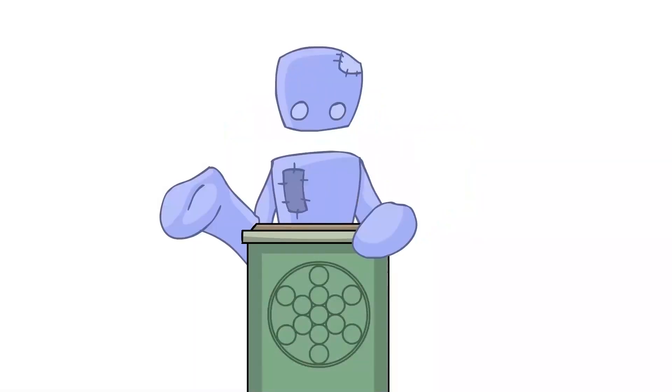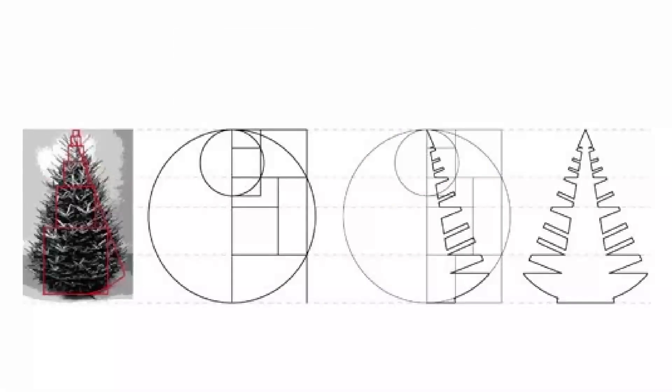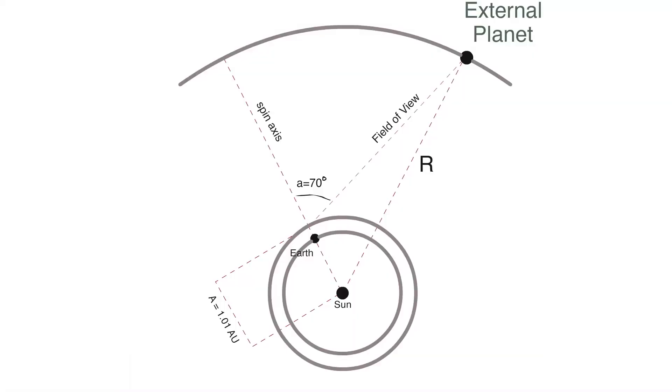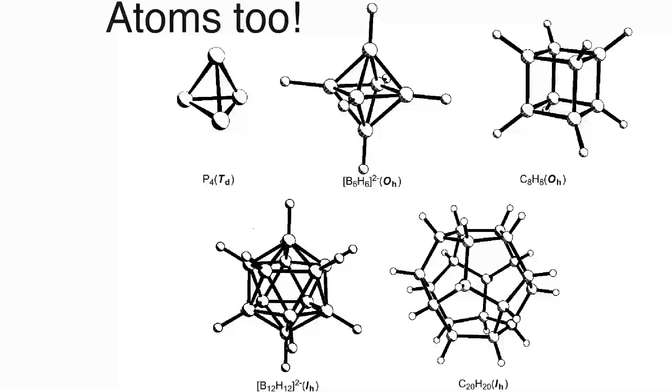Everything in the universe is geometric. Whether it's people, trees, cats, planets, solar systems, stars, you name it. Anything in the universe can be measured on a geometric scale.